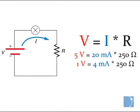Using Ohm's law, the 4 to 20 milliamps flowing through the 250 ohm shunt resistor will yield 1 to 5 volts full scale.